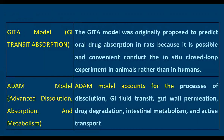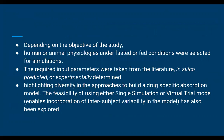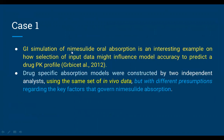Coming to model construction — as discussed, mechanistic models use parameter input-output. Depending on the objective of the study, human and animal physiological facets will be simulated. A case study of GI simulation of nanosilde oral absorption is an interesting example of how selection of input data might influence model accuracy to predict drug pharmacokinetic profile. Research published in 2012 showed a drug-specific absorption model constructed by two independent analysts using the same set of in vivo data but with different presumptions regarding key factors governing absorption.